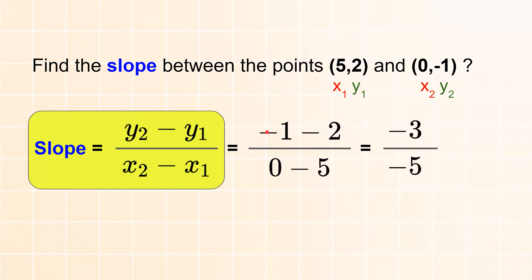If you do the math, negative 1 minus 2, they both have the same sign, so you're going to add them or combine them and keep the negative. 0 minus 5 is negative 5. Now negative divided by negative is positive. So the answer is 3 over 5. You cannot simplify further. And that's your answer.